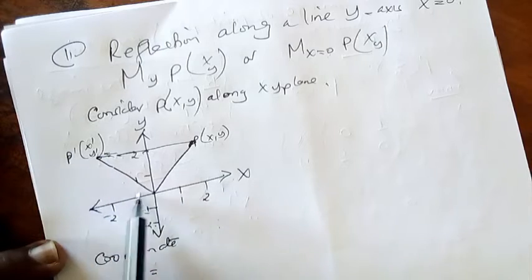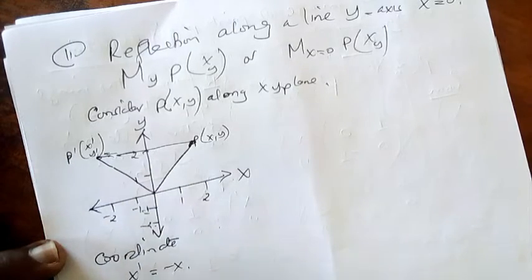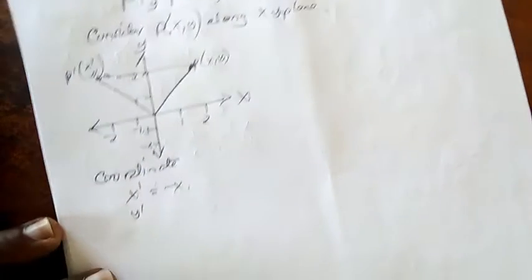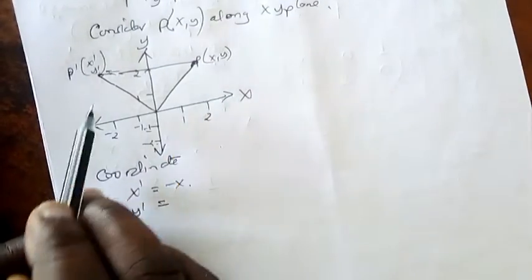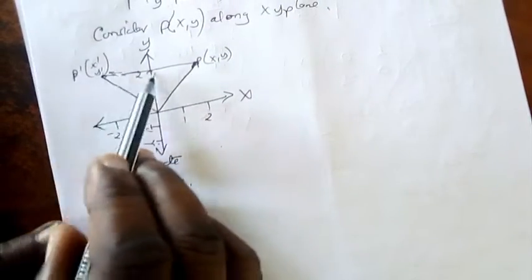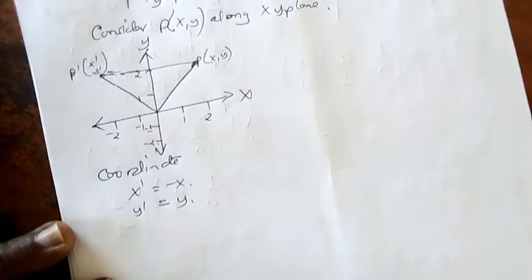But y dash, its coordinate y dash will be like this. In the beginning here y was positive, but now y will remain in the same side, positive. Y will remain positive, so it will be y.